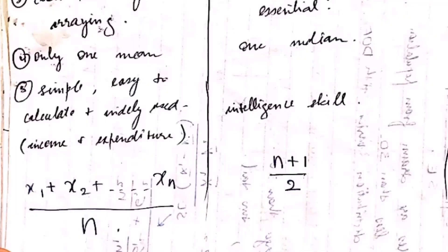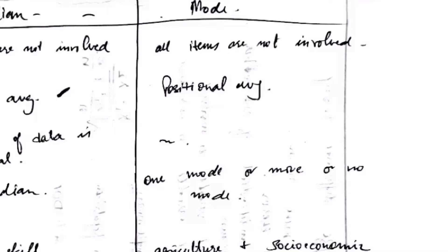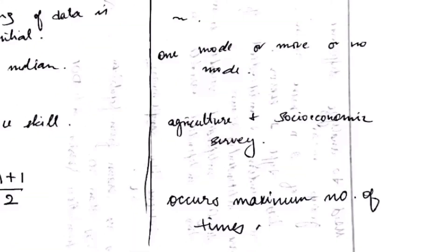Next is median. For finding the median, we arrange the data in either ascending or descending order and we get only one median. The formula for finding the median is (n+1)/2 — it is a positional average. Mode is basically the number that occurs the maximum number of times; we can have one or more than one mode.